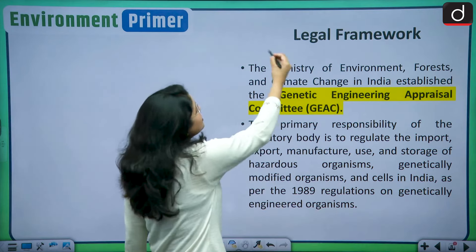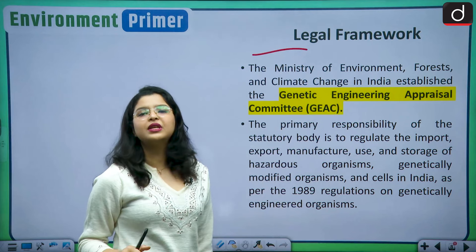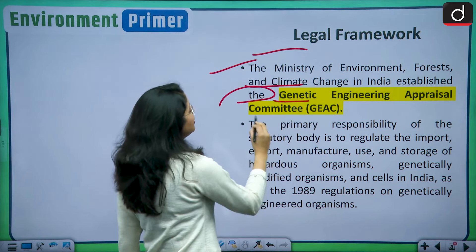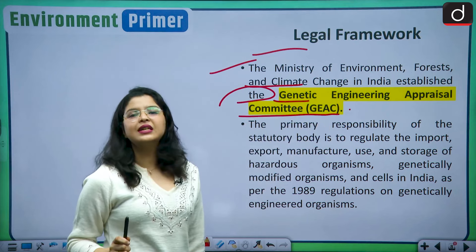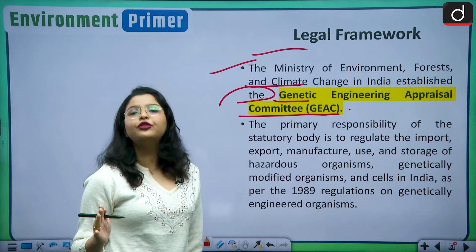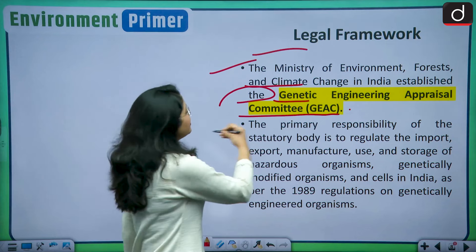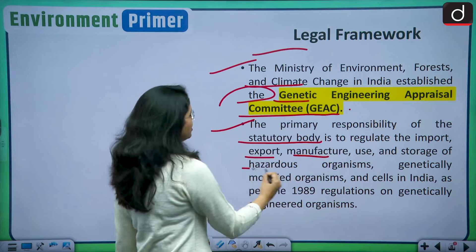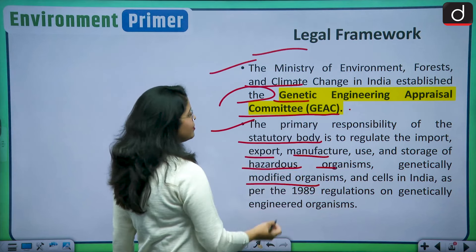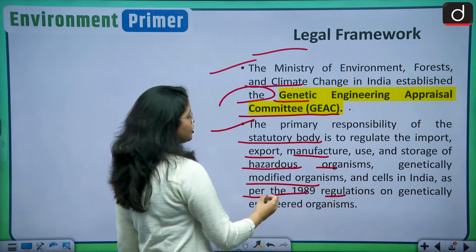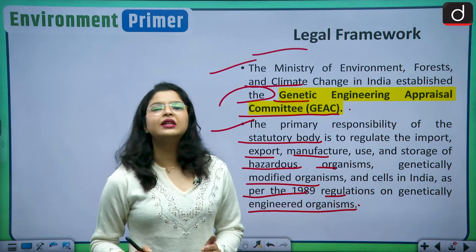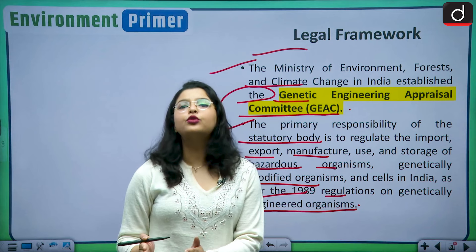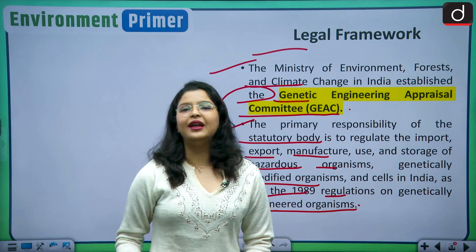Let us analyze the legal framework with respect to GM crops in India. The Ministry of Environment, Forests and Climate Change has established the Genetic Engineering Appraisal Committee — GEAC — as the primary body for approving commercial cultivation of GM crops in India. Its primary responsibility is to regulate the import, export, manufacture, use and storage of hazardous organisms, genetically modified organisms and cells in India, as per the 1989 regulations on genetically engineered organisms.